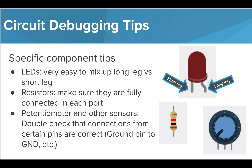When using specific components, there are some tips to help secure connections as well. LEDs only work in one direction, and it is very easy to mix up the placement of the long and short legs. If you're unsure, pull the LED out and switch the placement of the legs by turning the LED around to see if that fixes the issue. Resistors are very fragile and have long, flexible legs. This can sometimes make it difficult to push legs fully into the breadboard ports to make a full connection. Pull the resistor out of the port and carefully insert it again, or trim the legs to make it easier to connect to the needed ports.